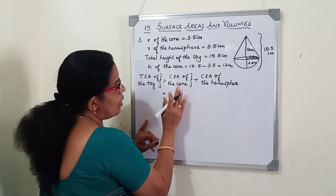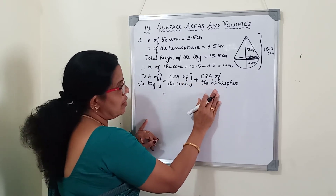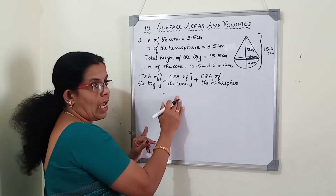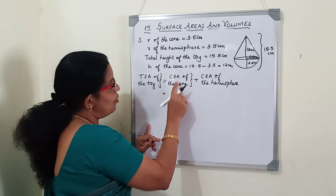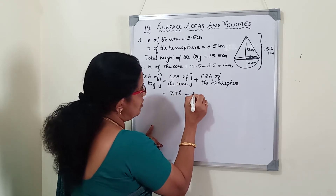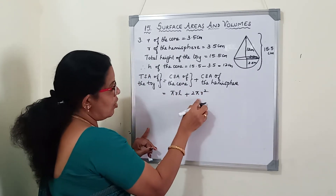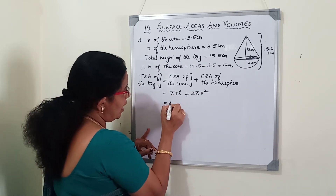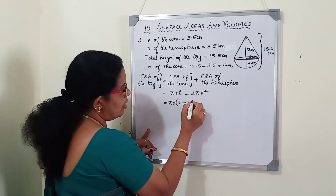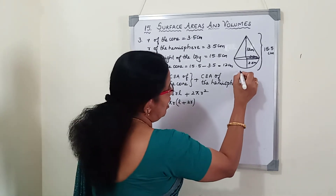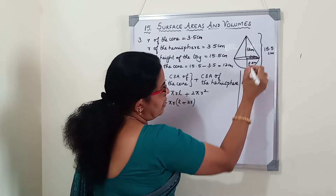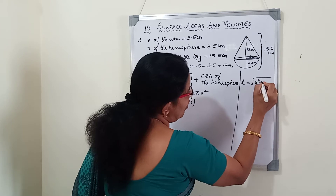CSA of the cone is πrl and CSA of the hemisphere is 2πr². L is not given, so we must find it first. Taking common factor πr, we get πr(l + 2r). L is the slant height, which is always larger than the height. The formula is l = √(r² + h²). Writing r as 7/2 and h as 12, we compute √((7/2)² + 12²).